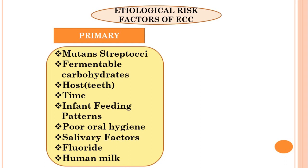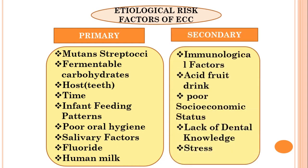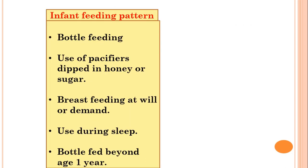The primary etiological risk factors for early childhood caries are mutans streptococci, fermentable carbohydrates, host, time, infant feeding patterns, poor oral hygiene, salivary factors, fluoride, and human milk. Secondary etiological factors include immunological factors, acidic fruit drinks, poor socioeconomic status, lack of dental knowledge, and stress.